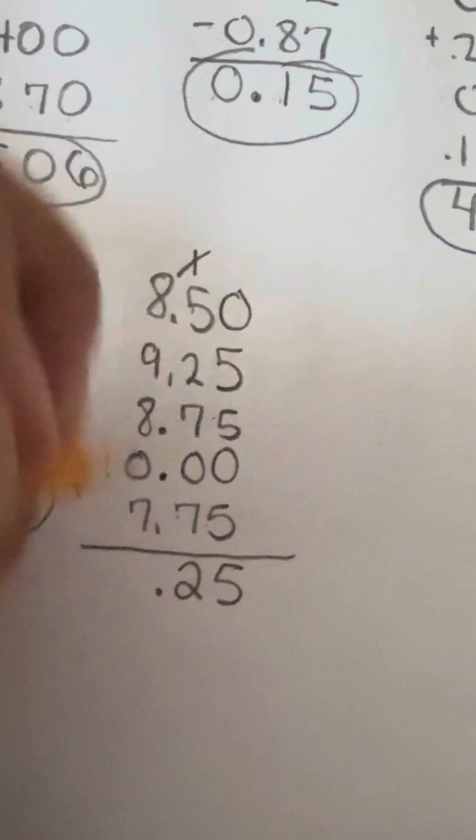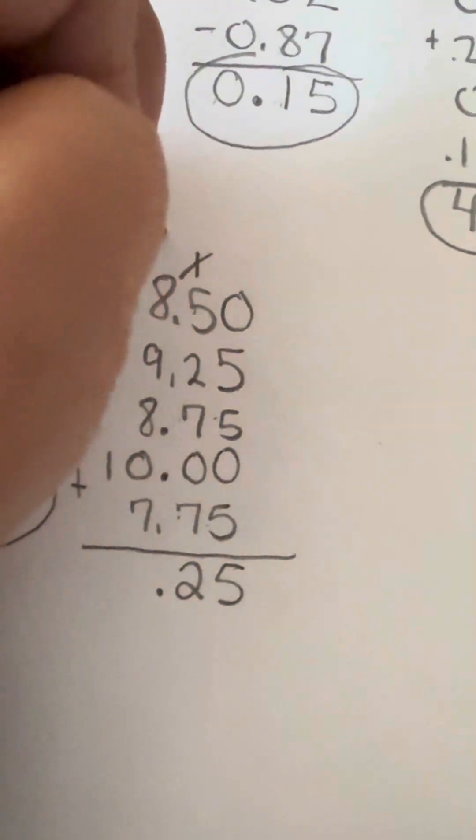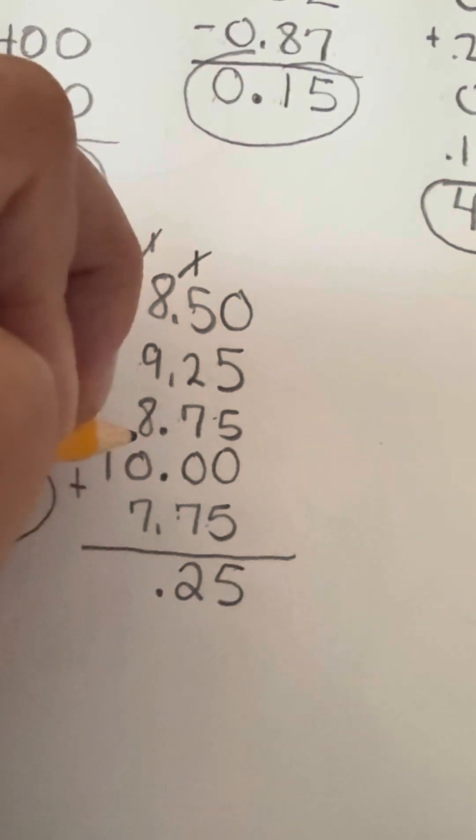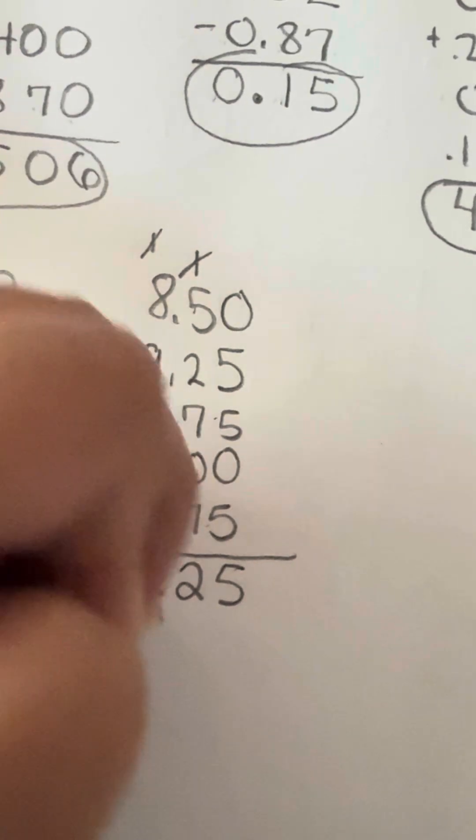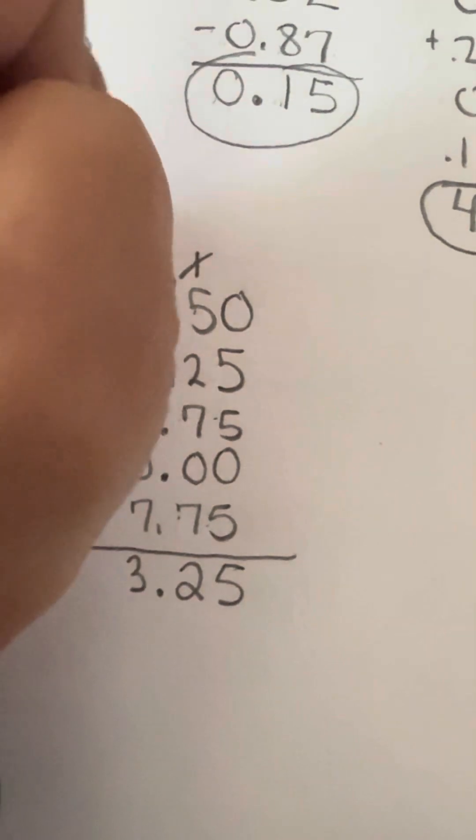And then this is going to be 15 plus 7 is going to be 22. So we're going to carry that over to the next line. A decimal got put in there. 8 and 1 is 9 plus another 9 is 18. And then we're going to have 18 plus 8.